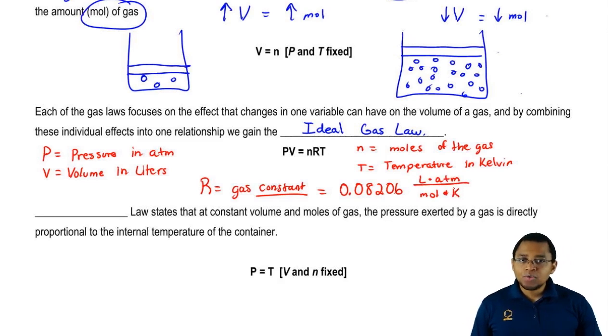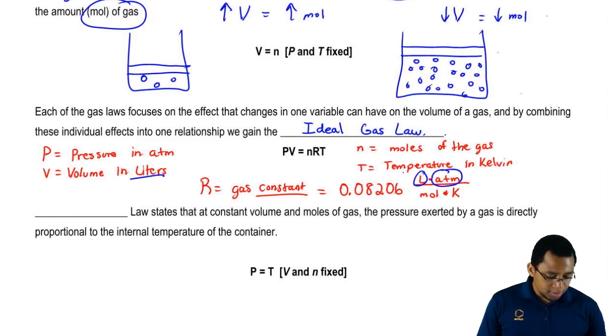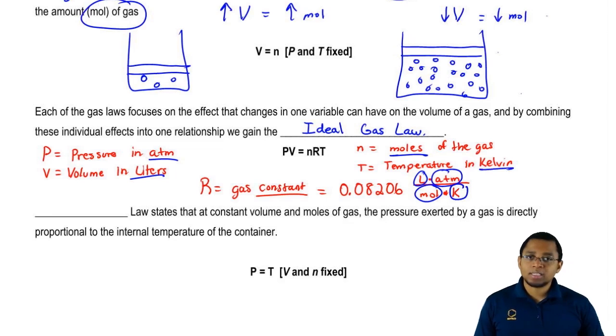And what you should realize is that the units in R are what telling us the other units for everyone else. So the units we find in R dictate the units found in all the other units. Because R has liters, volume has to be in liters. Because R has atmospheres, pressure is in atmospheres, moles, moles, and Kelvin, that's why temperature has to be in Kelvin. The units of R dictate the units of all the other variables.